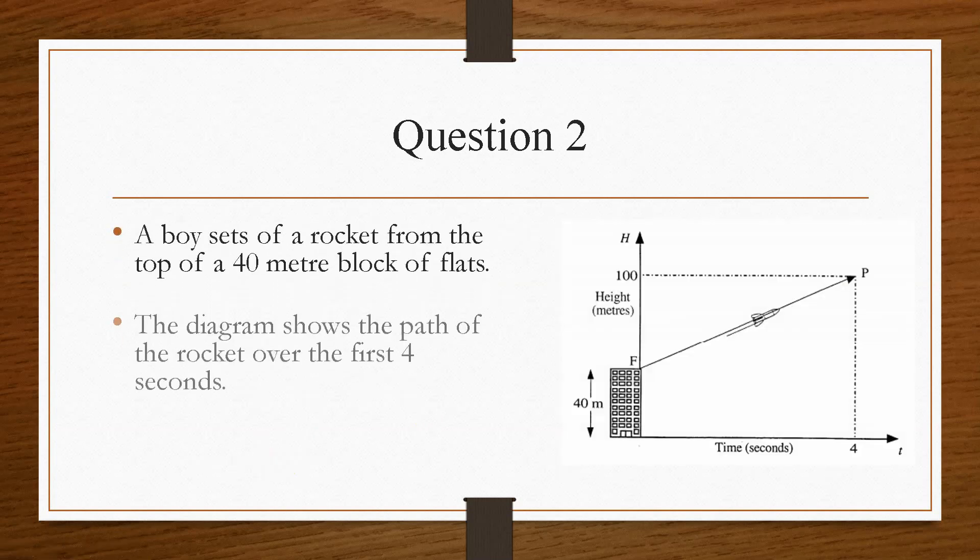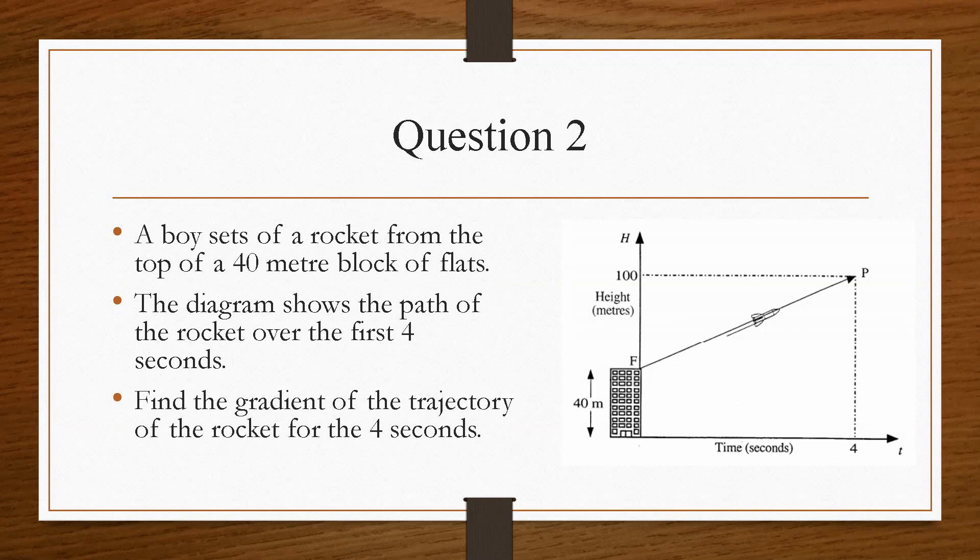So the second question is a problem solving question. And it gives us this diagram. This is a past paper question. And the question says that at the top of a 40-meter block of flats, a boy sets a rocket off. And it has the trajectory of a straight line. And it's asking us to find the gradient of the trajectory of the rocket for 4 seconds. So on the x-axis is time, and for the y-axis is h for meters.